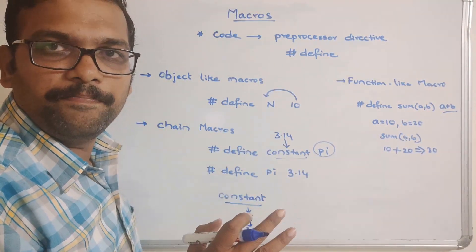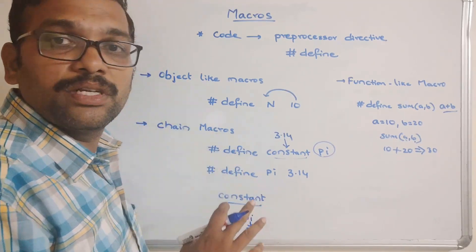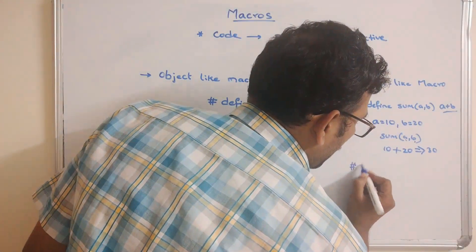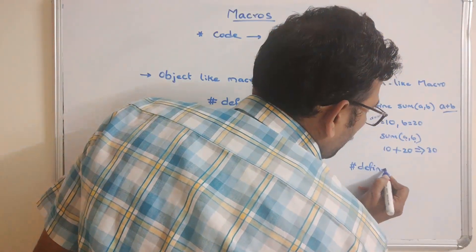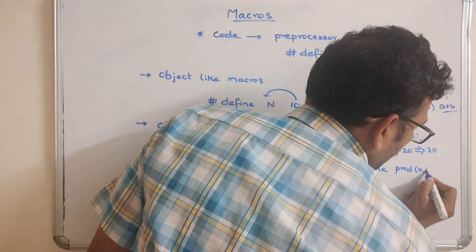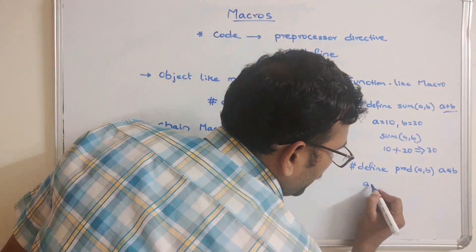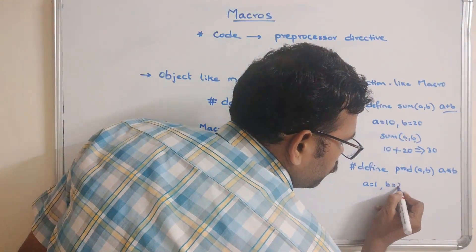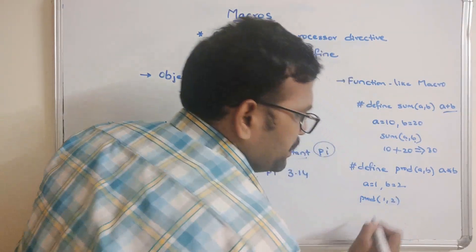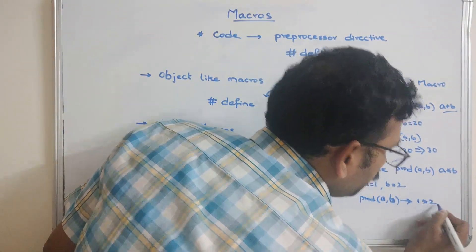An important point: macro values are not stored in memory — they are directly substituted. For example, #define product(a, b) a*b. If a=1 and b=2, calling product(1, 2) gives 1*2 = 2.